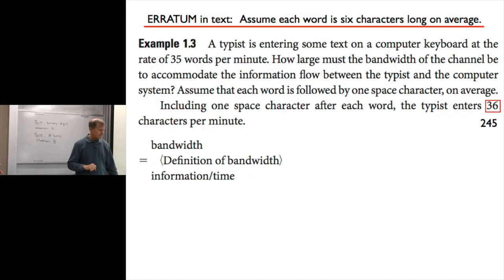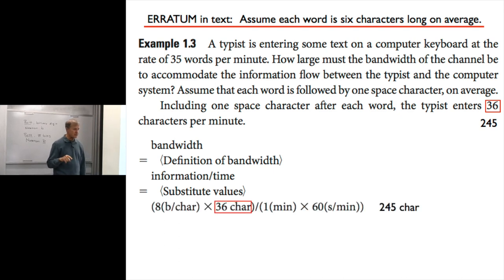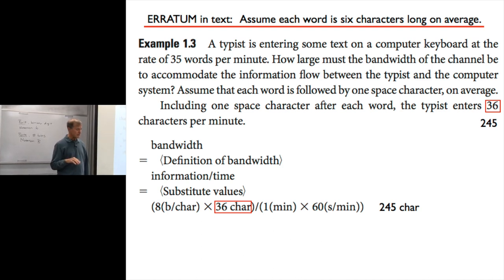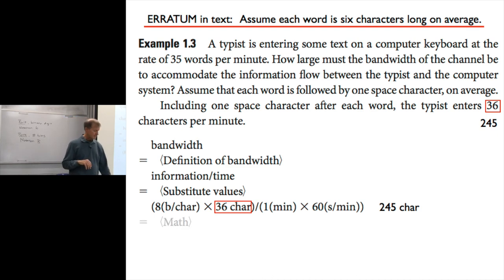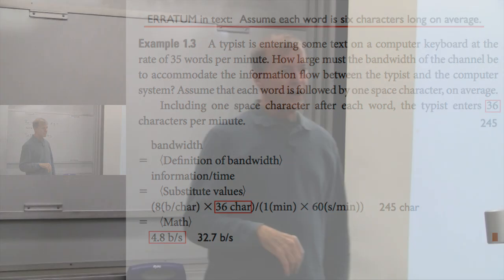So we needed that extra piece of information. Bandwidth equals information per time. Substituting the values: 8 bits per character times 36 characters per minute — that's how many bits go over the channel per minute. Then we divide by 60 seconds per minute to get bits per second. Cancel the units and multiply out; you get 4.8 bits per second. That's the bandwidth — very low.